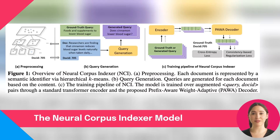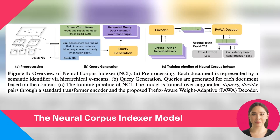The encoder of the model follows the standard transformer architecture and outputs the representation for an input query. As for the decoder, it is composed of M2 transformer layers and a weight adaptation mechanism, which makes the decoder aware of semantic prefixes. This allows NCI to better align with the hierarchical nature of the semantic identifiers, resulting in more accurate document retrieval. At inference time, the top relevant documents can be easily obtained via beam search. The hierarchical property of semantic identifiers makes it easy to constrain the beam search on the prefix tree, so only valid identifiers will be generated.